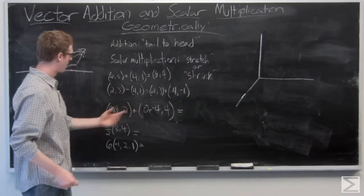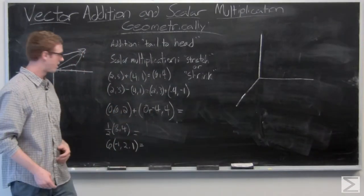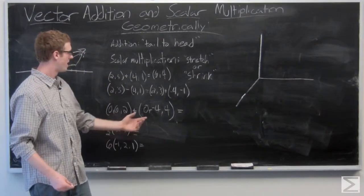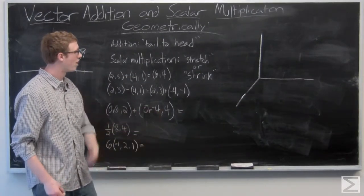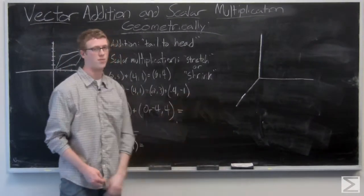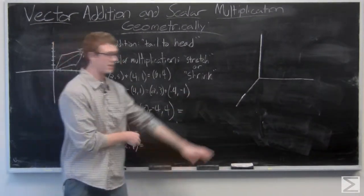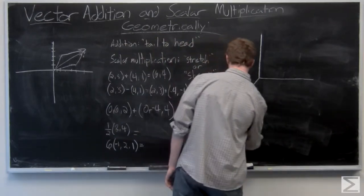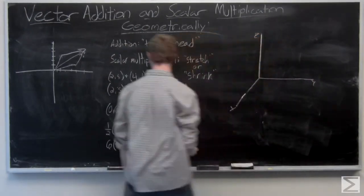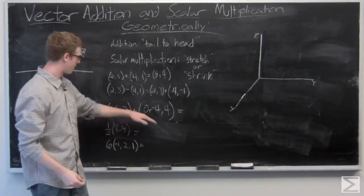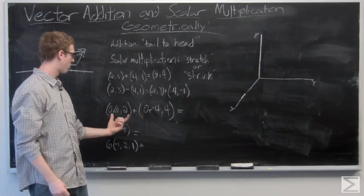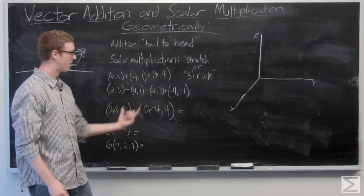So now we can take a look in 3-space. We can take a look at some addition here. We have the vector (0,6,2) and (0,-4,4). I've made it pretty simple on myself so I don't have to draw anything confusing coming out of the board here, as this is our x-axis. So we have (0,6,2) plus (0,-4,4). Add the vectors component-wise: (0,2,6).